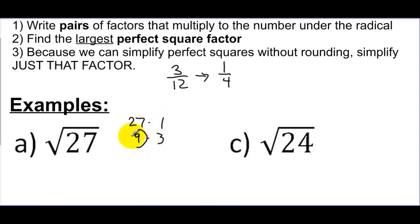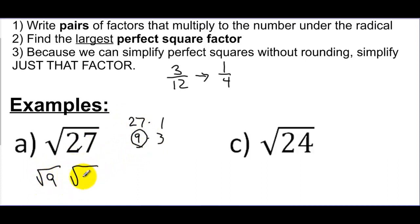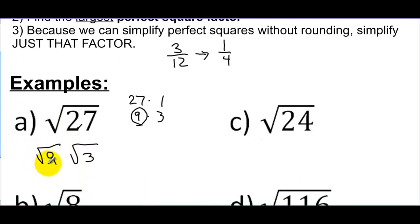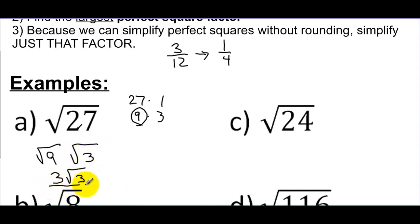So I'm going to choose 9 because I know the square root of 9. I'm going to say this turns into the square root of 9 and the square root of 3. The reason I chose to do this was because I can at least simplify part of this. I know what the square root of 9 is — it's 3. I don't know the square root of 3 off the top of my head, so I'm going to leave that one alone.